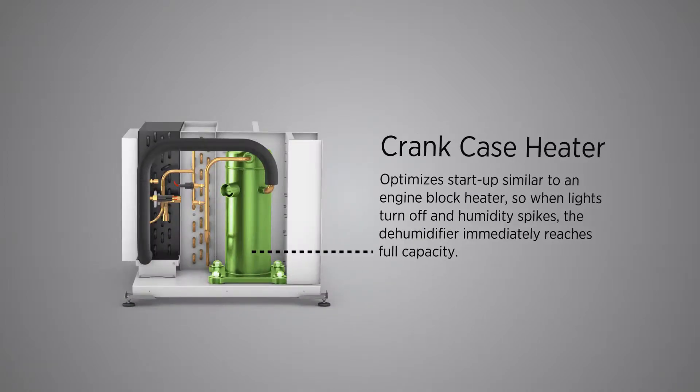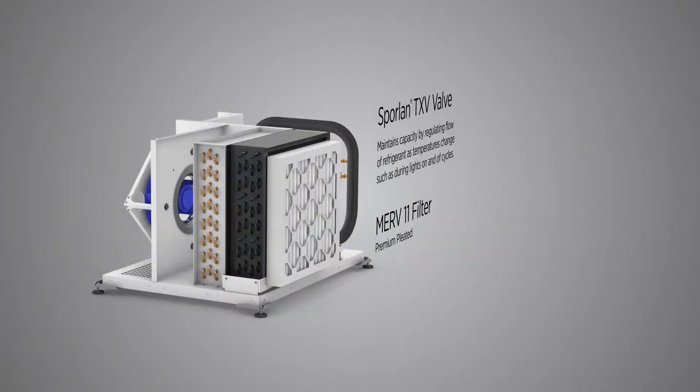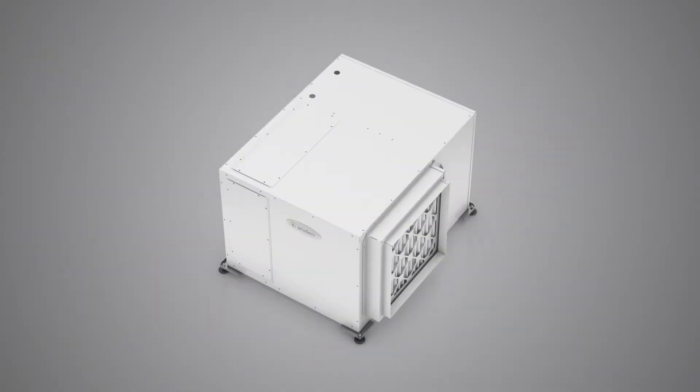Andin dehumidifiers are the only grow-optimized dehumidifiers to include a crankcase heater, TXV valves, scroll compressors instead of rotary, a corrosion-resistant coil, variable speed blower, and a digital relative humidity sensor.